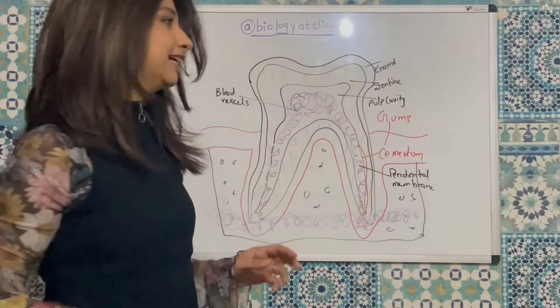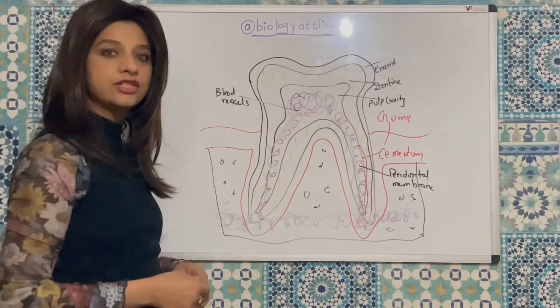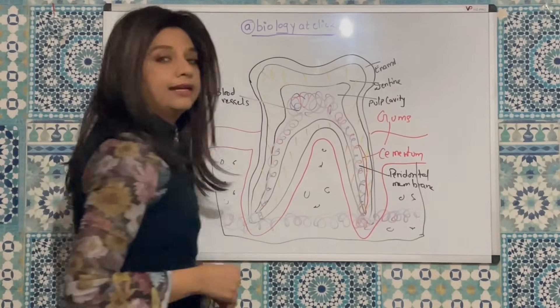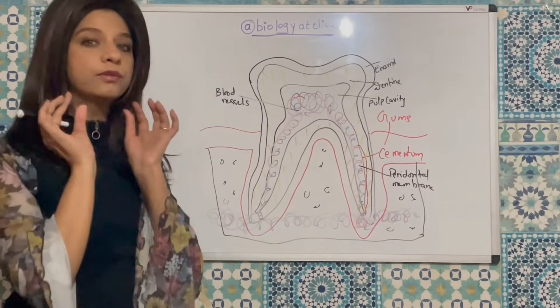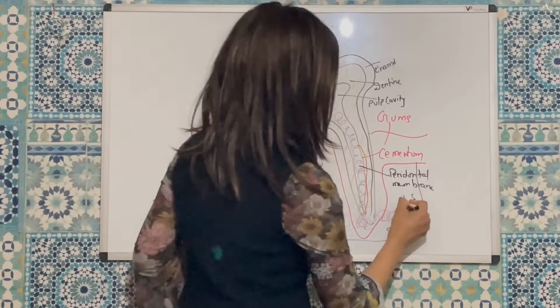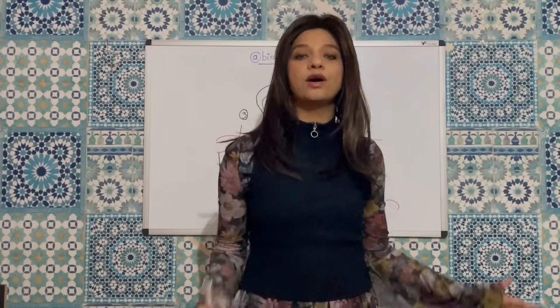And finally, the entire tooth structure is surrounded by bone that helps to form the tooth socket. It is called the alveolar bone.